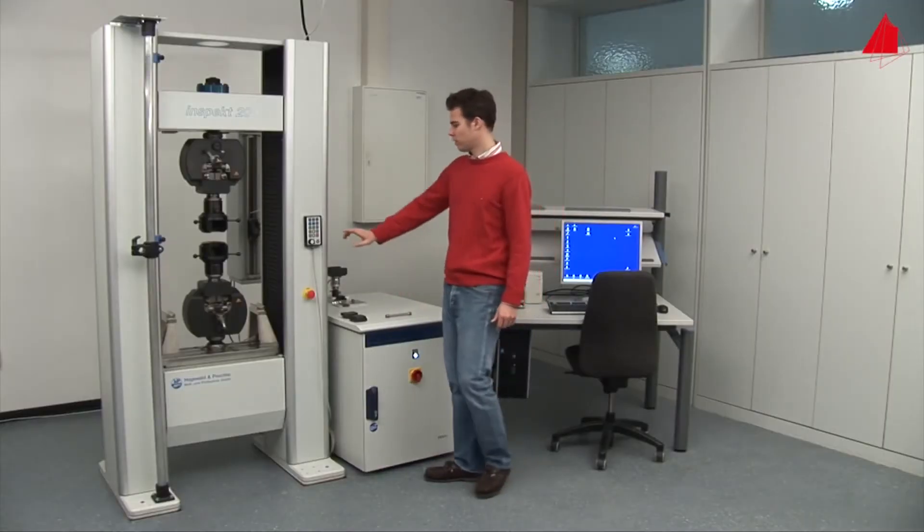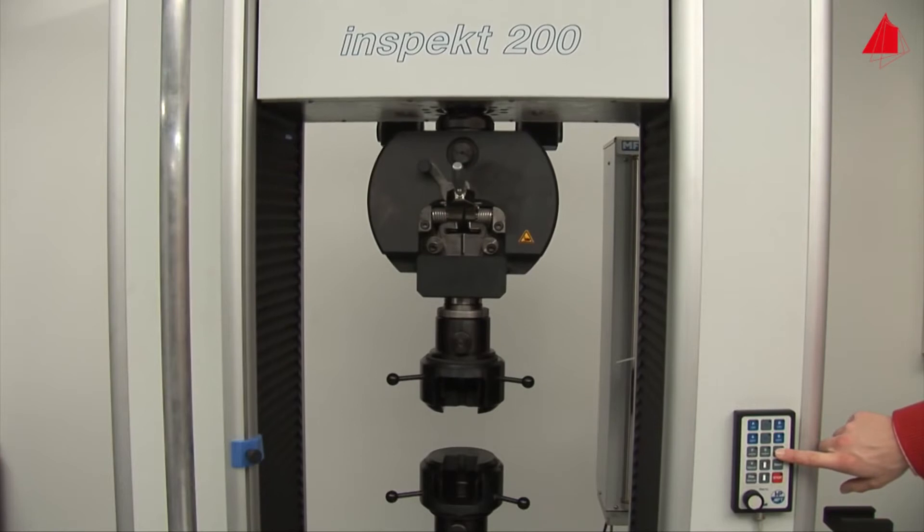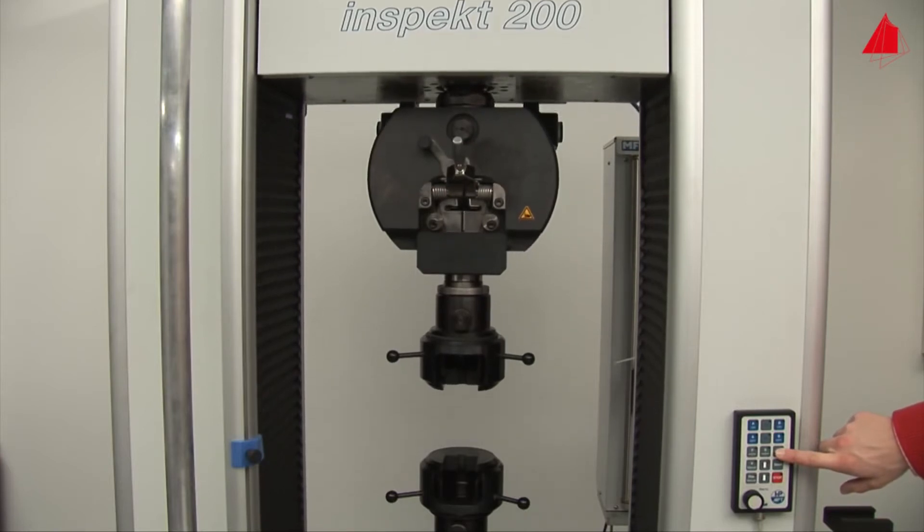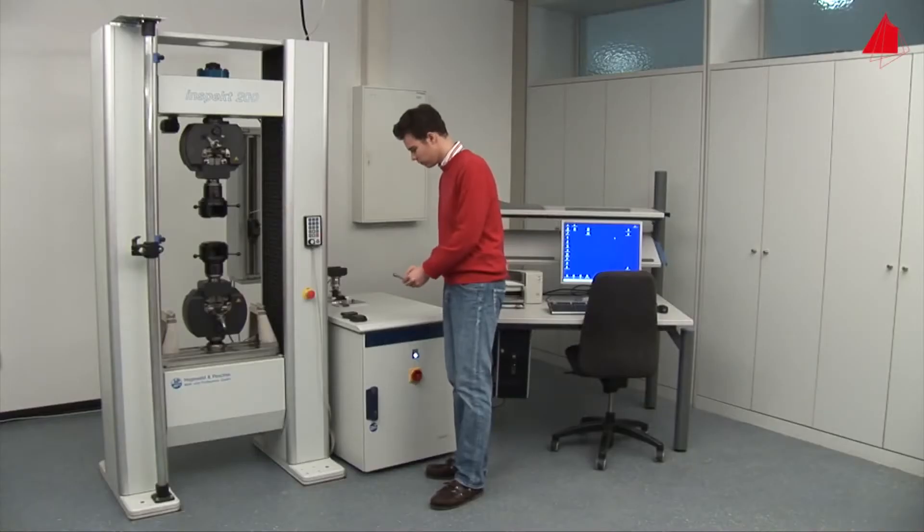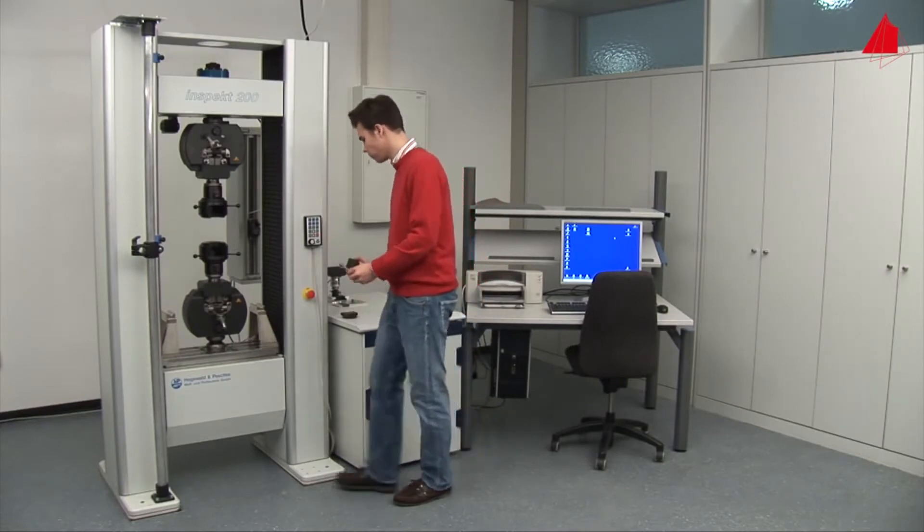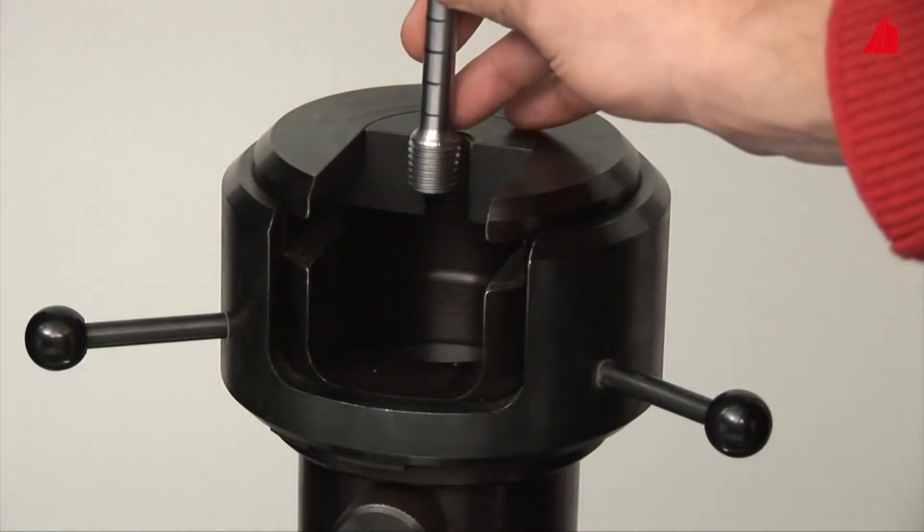Using a hand control, the tester moves the upper crosshead into its correct starting position. Now he can place the threaded ends of the test piece in the lower and upper grips of the testing machine.